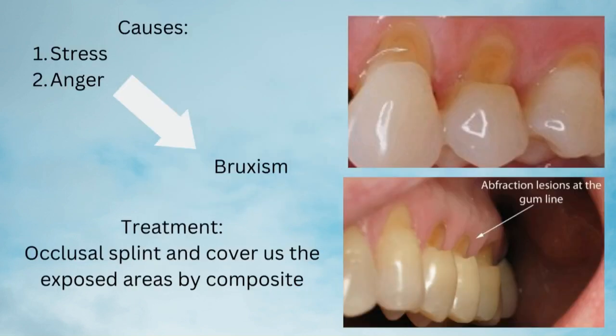Abfraction is similar to attrition in that stress and anger lead to bruxism. The treatment is likewise an occlusal splint. You also cover the exposed areas with composite and can place a desensitizer on the exposed roots to reduce hypersensitivity for your patients.